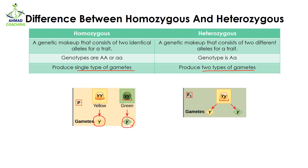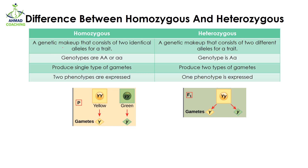In case of heterozygous, we will have two types of gametes because two different alleles are present — capital Y and small y. So half of the gametes will have capital Y while the other half will have small y.